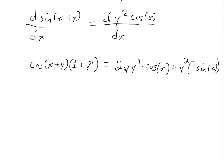Now we just try to simplify and expand this out to solve for y prime. Multiplying this inside, we'll get cos of x plus y, that's times 1, and then plus y prime cos of x plus y. This equals 2y y prime cos of x minus y squared sine of x.